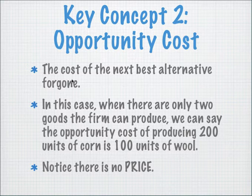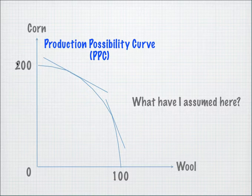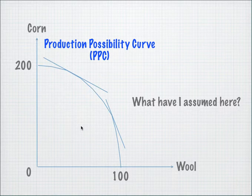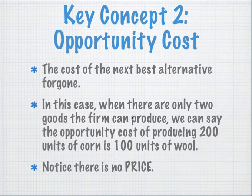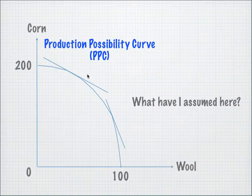Opportunity cost is the cost of the next best alternative forgone. As you can see from this diagram, in order to produce 200 units of corn, you have to sacrifice 100 units of wool. Conversely, to produce 100 units of wool, you have to sacrifice 200 units of corn. So you can say that the opportunity cost of producing 200 units of corn is actually 100 units of wool. Notice I'm not talking in terms of prices — there's no price here. The assumption I've made is that the gradient of the curve changes as we move along the x-axis.